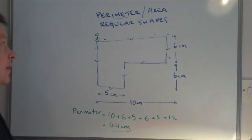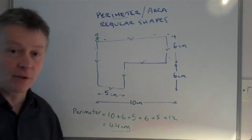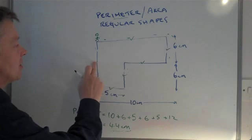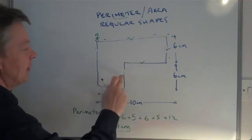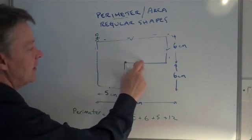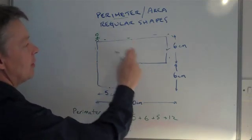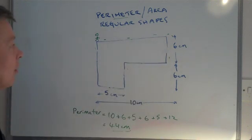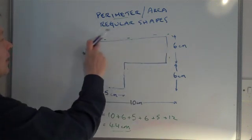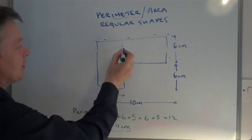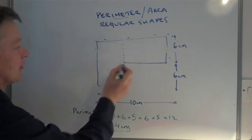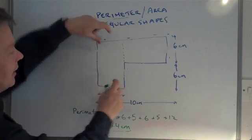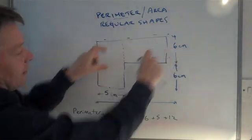The other thing to be aware of is the other part of the question, which would be area. What I'm going to do is, to make it a little bit easier, I'm just going to divide this shape up into two separate blocks. So I'm going to divide it up into two separate blocks, and the area is all of this area added to all of that area.